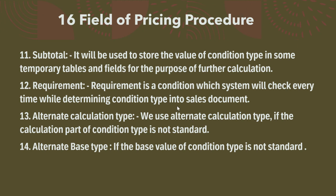The thirteenth field is Alternate Calculation Type. We use this when we want the system to calculate the condition type value in a non-standard way, or when we do not want it determined using the condition record. It is basically a formula where we define the logic to determine the condition type value.